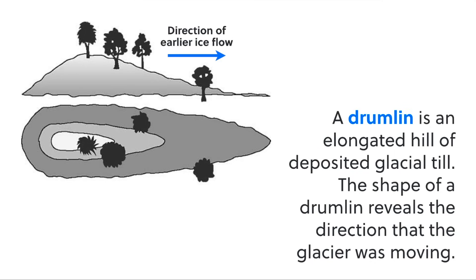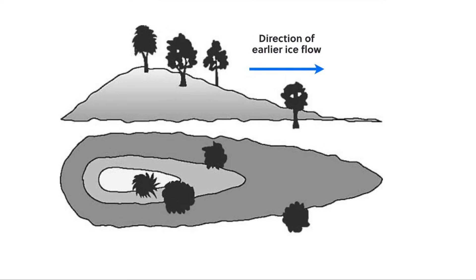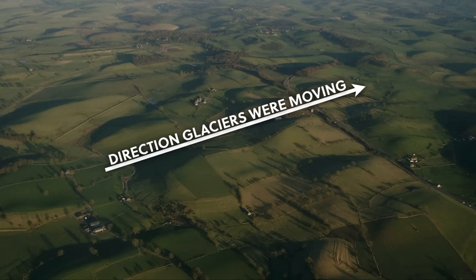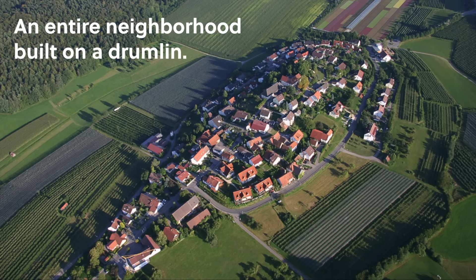By looking at the shape of the hill, you can determine the direction that the ice flowed. It often flowed towards the flatter, less steep side of the hill. Here's a field of drumlins in upstate New York, and by looking at the shapes, we can tell that the ice was moving in this direction. Here's an entire community that appears to have been built right on top of a drumlin, surrounded by farming fields.